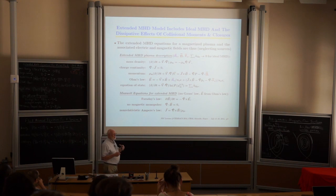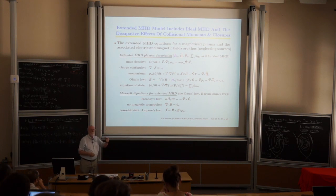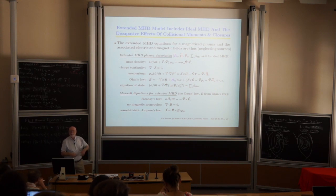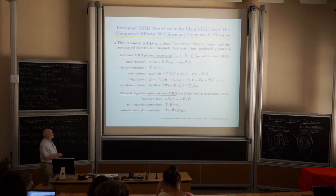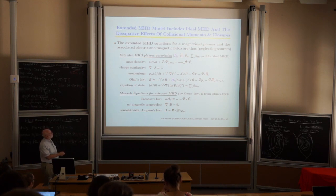We're doing mostly non-relativistic physics, so we're always quasi-neutral, and to lowest order we don't need to worry about d(rho_charge)/dt. Looking at the non-relativistic Ampère's law, if we take its divergence, we get divergence J equals zero — so our charge continuity equation is the same as divergence J equals zero.